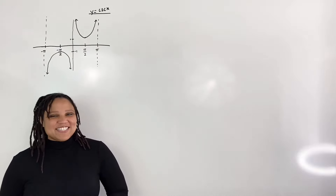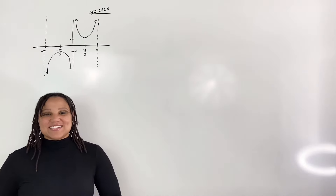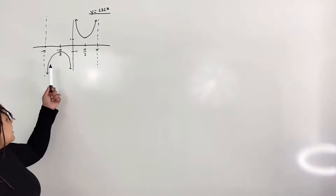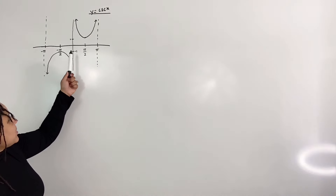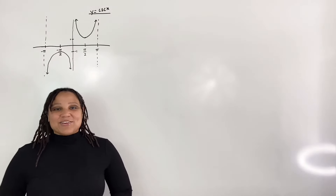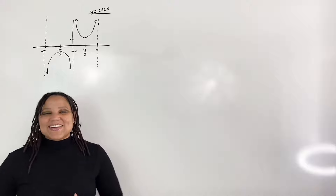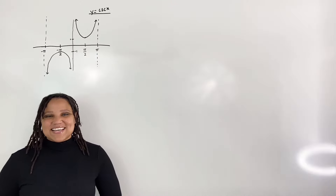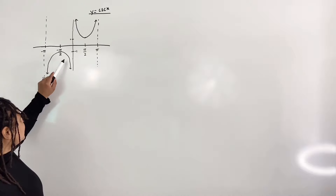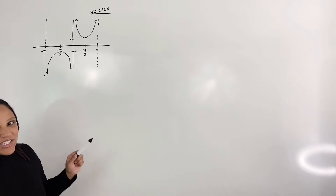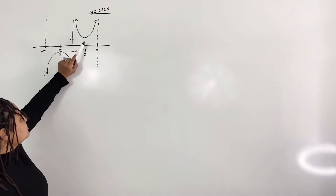But mathematicians are clever. Mathematicians decided to restrict the domain from negative pi over 2 to 0, union 0 to pi over 2. In this way, the graph passes the horizontal line test and thus cosecant has an inverse. So we restrict the domain from negative pi over 2 to 0, but not actually including 0, and from 0 to pi over 2.